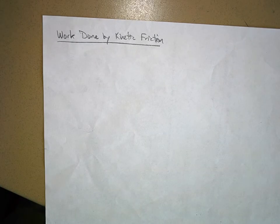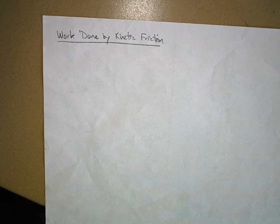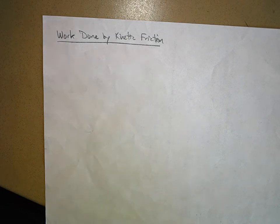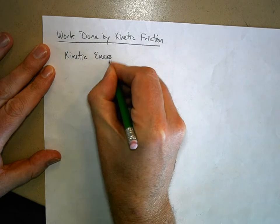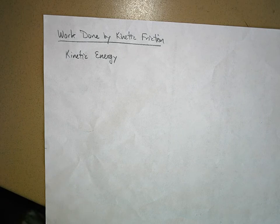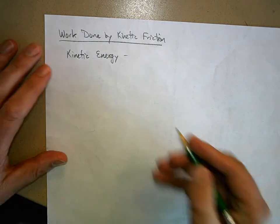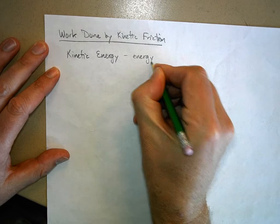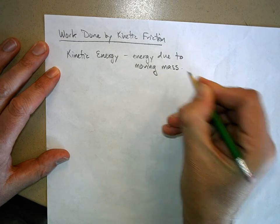Let's talk about the work done by kinetic friction. You really should read section 7.6. We have one form of energy talked about already, and that is kinetic energy — the energy that an object has because it has mass and it's moving. Energy due to moving mass.